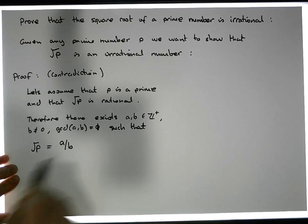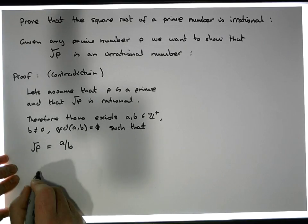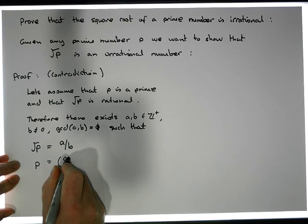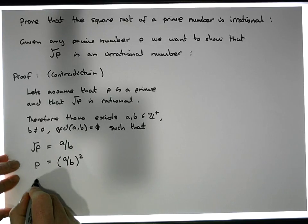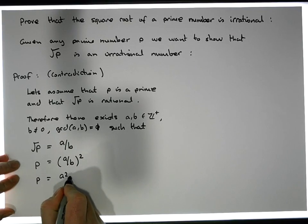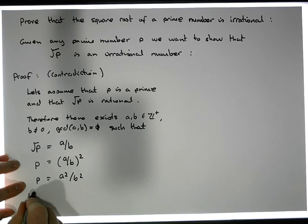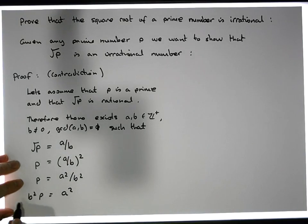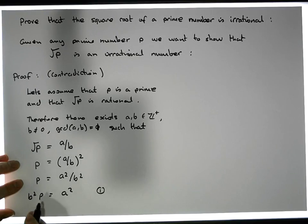So what does this imply? Well, if the square root of P is equal to A over B, then we must have P equal to the square of A over B, so P is equal to A squared over B squared. Therefore B squared times P is equal to A squared. This is an important identity here for us — this particular equation is actually really important.